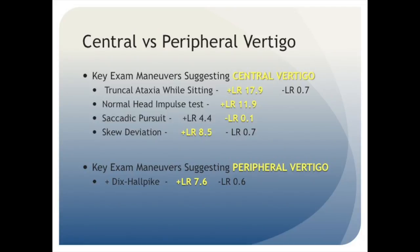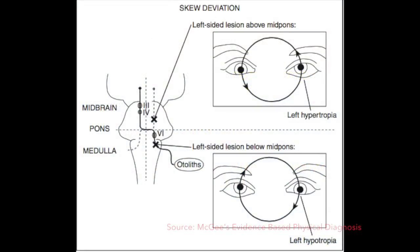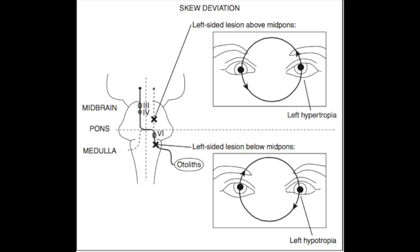Next, let's discuss skew deviation, which, with a positive likelihood ratio of 8.5, strongly suggests a central cause to a patient's vertigo. Here we see what skew deviation looks like, with a slight hypertropia or hypotropia of the eyes when they're gazing head-on. So if you're examining a vertiginous patient and you notice this sort of uneven gaze, that should tip you off that there may be an underlying central cause.